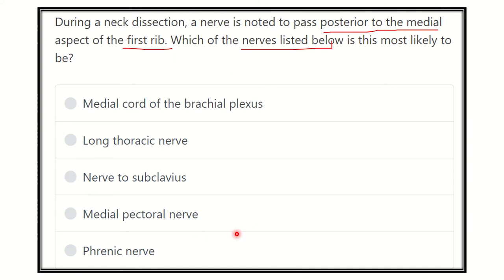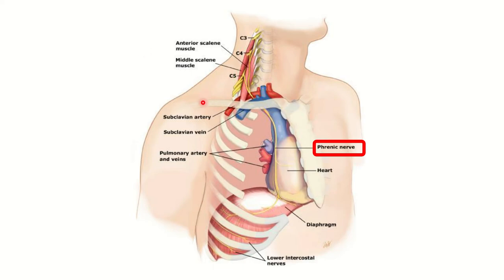We have to find which nerve passes behind the first rib very close to the sternum. We can see the clavicle, and below the clavicle there is the first rib, very close to the sternum. There is a nerve going down on the right side, supplying the diaphragm. This nerve lies behind the first rib — it is the phrenic nerve.